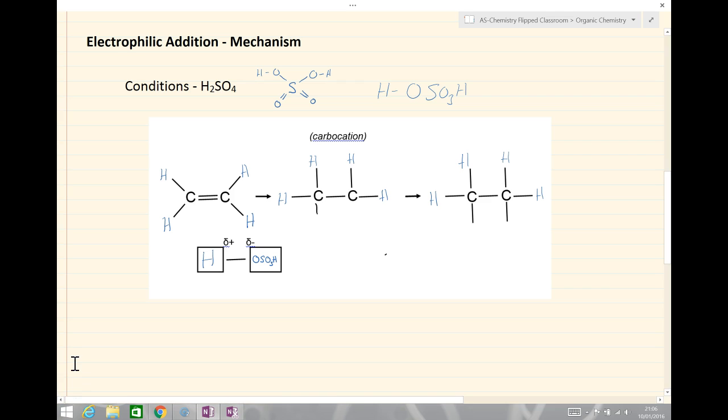The mechanism though is exactly the same as we've seen previously. We have a polarized molecule between the hydrogen and the oxygen. The hydrogen is delta positive and the rest of the molecule there being delta negative. We've got the electron density in the carbon-carbon double bond and so we have electron movement from the double bond into the hydrogen and then from the bond onto the OSO3H. Leaving us again a carbocation intermediate with a hydrogen on one side, a carbocation intermediate and a negatively charged with a lone pair of electrons and the rest of the sulfuric acid molecule.